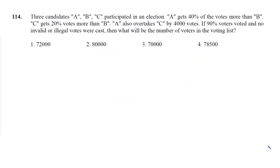Three candidates A, B and C participated in an election. A gets 40% of the votes more than B. C gets 20% votes more than B. A also overtakes C by 4000 votes. If 90% voters voted and no invalid or illegal votes were cast, then what will be the number of voters in the voting list? So look here, A gets 40% votes more than B. 40% means two-fifths.